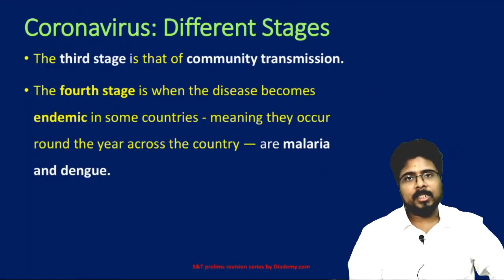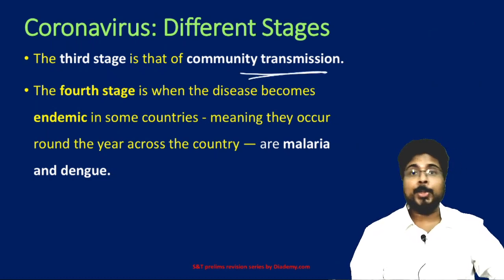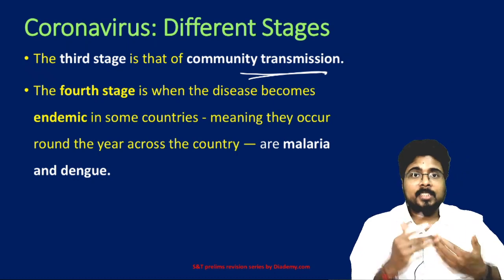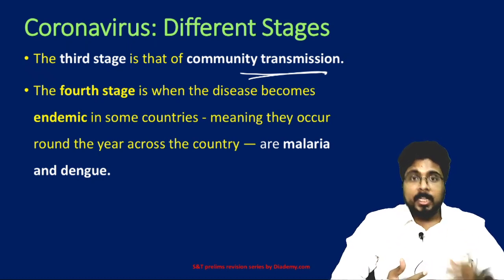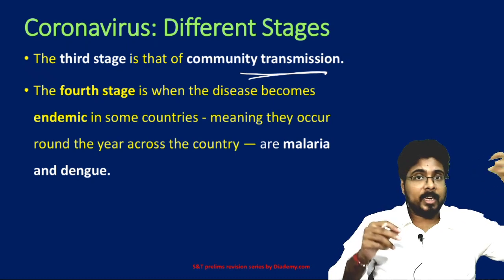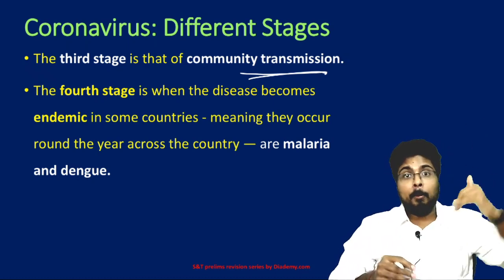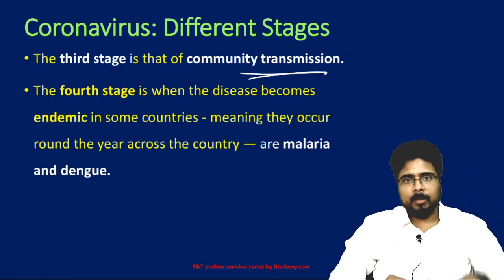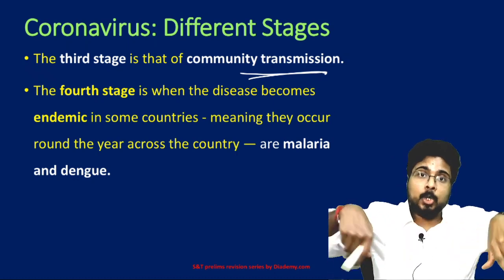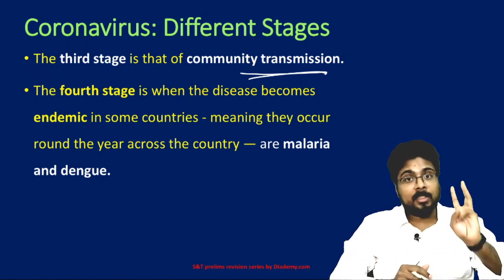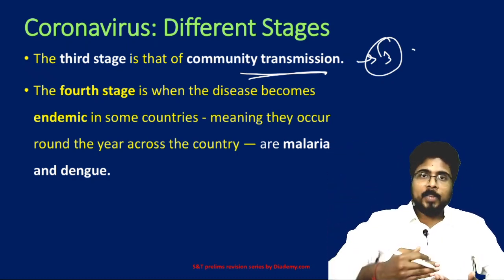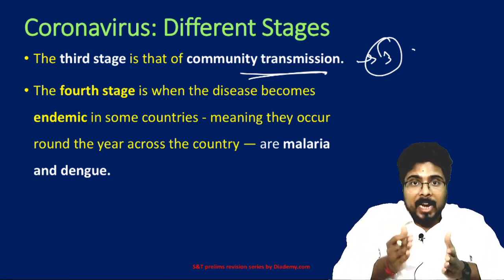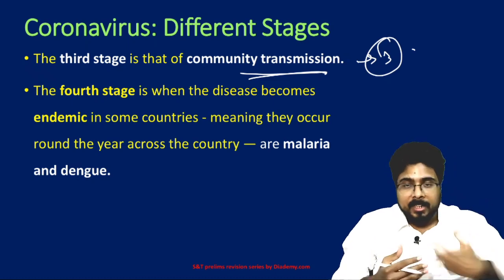The third stage is community transmission. Community transmission means the disease has spread to more than 40–50% of the population and we don't know the source of infection — we cannot trace where the person got the virus. In stage two we could identify the source; in stage three we cannot. The fourth stage is when the disease has become endemic in the countries where it was spread — meaning it occurs seasonally, time and again, like malaria and dengue.